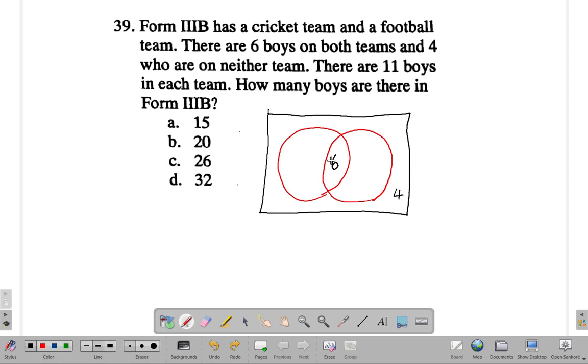Eleven boys on each team. Let's see. This is cricket and this is football. You have eleven on each. So, you have six already on the cricket team and the remainder. That's six, seven, eight, nine, ten, eleven. That's five remaining.